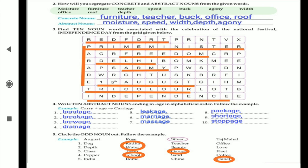Fifth question is: Circle the odd noun out from the examples. First question as example: August, Rose, Silver, and Tajmahal. Why is Silver odd noun? Because it's a material noun and remaining three are proper nouns. Second is: dog, Radha, teacher, and office.